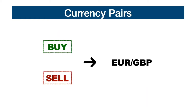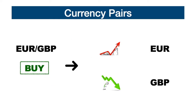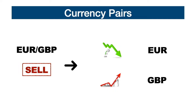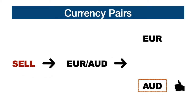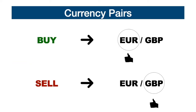In the forex market you have the option of both buying and selling a specific currency pair. Buying a currency pair means you are always buying the base currency and selling the quoted currency, while selling a currency pair means you are selling the base currency and buying the quoted currency. Selling a currency pair is as simple as buying one. For example, by selling the pair euro-Australian dollar, we are speculating that the Australian dollar is stronger than the euro. When buying, you speculate on the strength of the base currency, while when you sell, you speculate on the strength of the quoted currency.